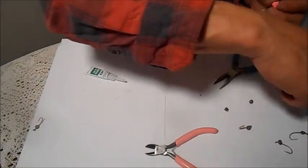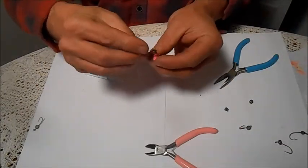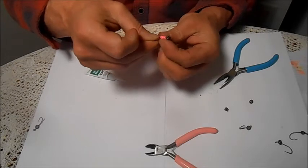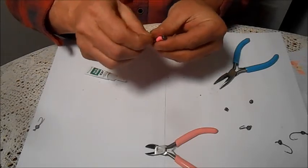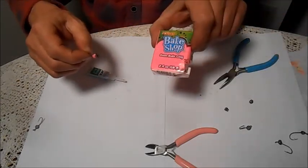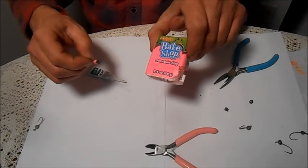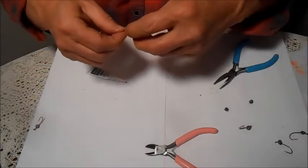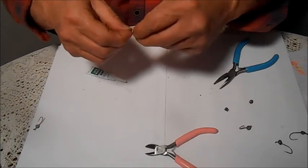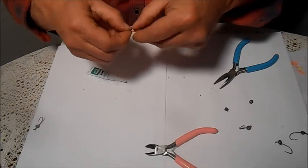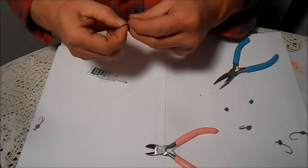You can just take your clay - this is Bake Shop clay from Walmart, 97 cents, comes in every color imaginable. Once you get this formed on here, you just hang this upside down on the rack in your oven and bake it for about 15 minutes at 275 degrees.